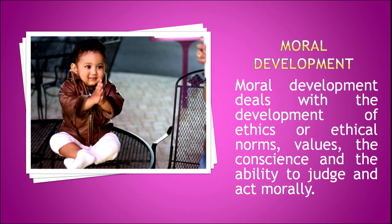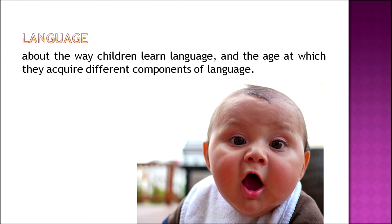The next aspect of development is moral development. As the name suggests, moral development deals with the development of your ethics, norms, values, conscience, and the ability to judge and act morally in the social system. The next aspect is language development — the acquisition of language — which is all about how children learn language and the age at which they acquire different components of language.